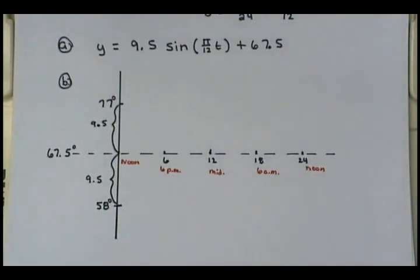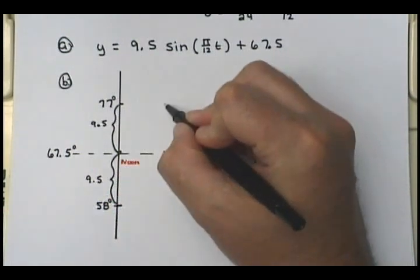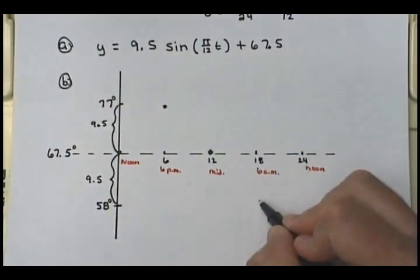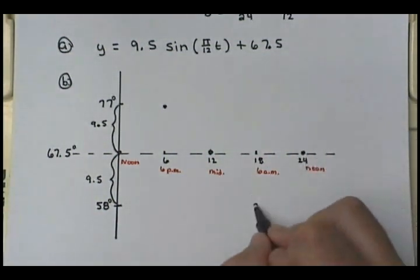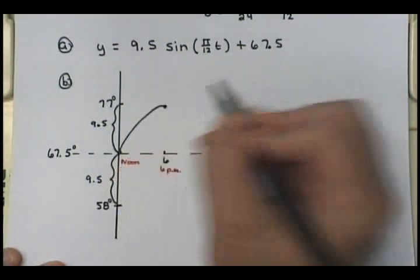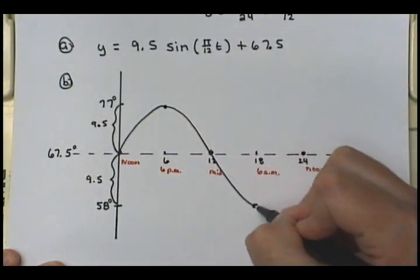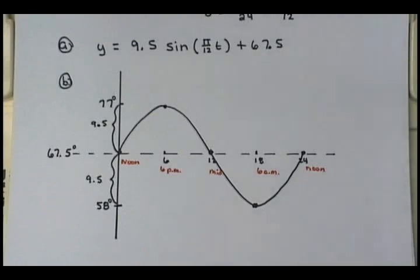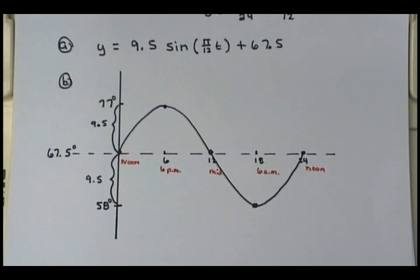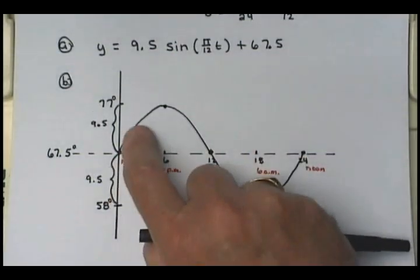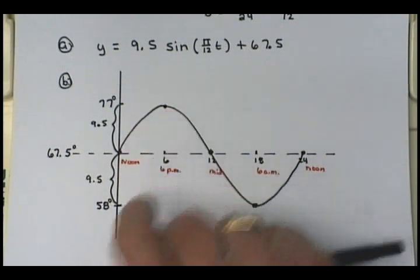Cosine starts here, goes up to the amplitude, back here, down to the minimum amplitude, and then back. So the sine graph starts at the midline at noon, rises to the peak at 6 p.m. at 77 degrees, comes back to midline at midnight, drops to the low of 58 at 6 a.m., and returns to midline at noon again.